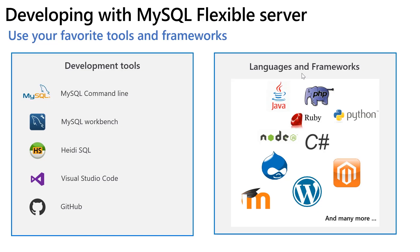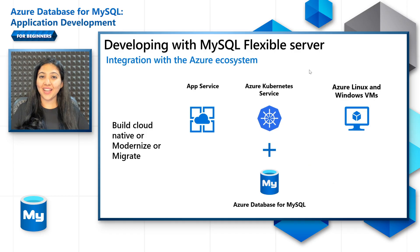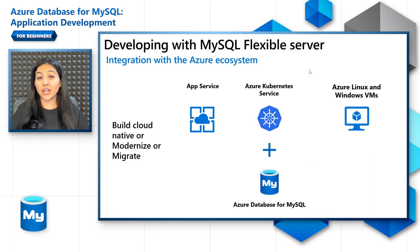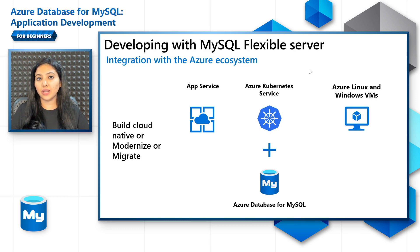The front end can be built with any of the languages that you are familiar with, or content management systems like WordPress, Joomla, Drupal, or learning management systems like Moodle, or e-commerce systems like Magento. And thanks to the Azure ecosystem, you can host your application on App Service — web apps, API apps, function apps — or on Azure Kubernetes Service (AKS), which is particularly suitable for microservices architecture, or on Azure Linux or Windows VMs, where you would have to host the application on a web server and manage it yourself, while the first two options are managed path solutions.